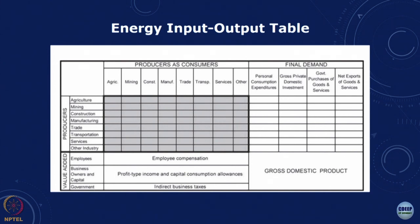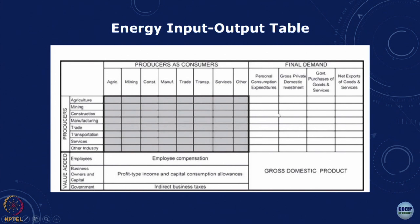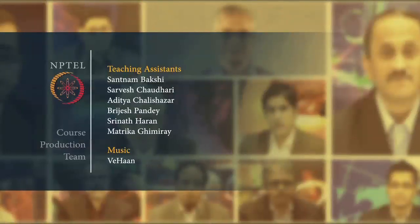Looking at the general input-output table from the book by Blair and Miller — 'Input-Output Analysis,' second edition — we see different kinds of producers and the final demand. Typically, sectors include agriculture, mining, construction, and manufacturing, forming a matrix where flows go from agriculture to agriculture, agriculture to mining, and so on. In addition to this, there are salaries, taxes paid to government, and profits. Looking at all of these transactions together gives us an estimation of the gross domestic product.